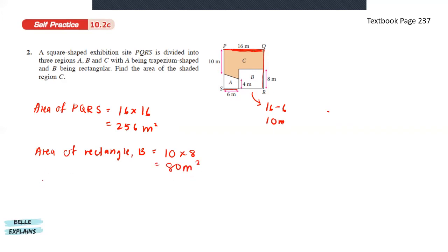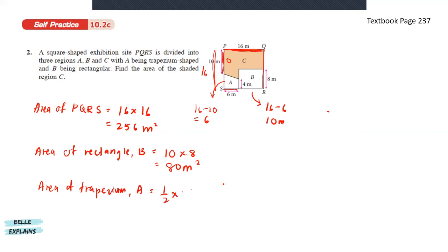Next for trapezium A: the whole length is 16 and we know this part is 10, so the remaining part is 16 minus 10, which is 6. The area of the trapezium is 1 over 2 times the sum of parallel lines times the height — so 1 over 2 times (6 plus 4) times 6, giving us 30 meters square.